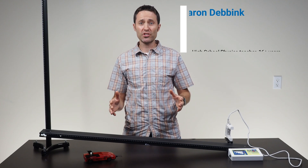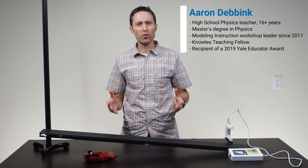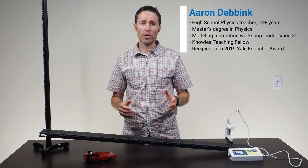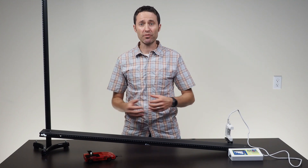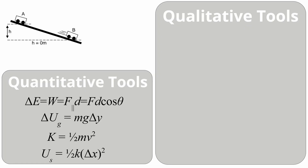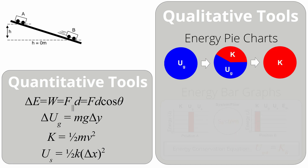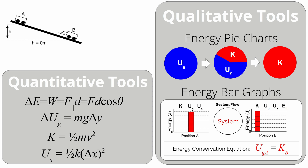In order for students to solve energy conservation problems, they need to be proficient with both qualitative and quantitative tools. Before jumping to equations, students first need to be able to identify where the energy is being stored before and after a certain event. Some qualitative tools which help students represent where energy is stored include energy pie charts or energy bar graphs. These qualitative representations can help students create an energy conservation equation for the given scenario.